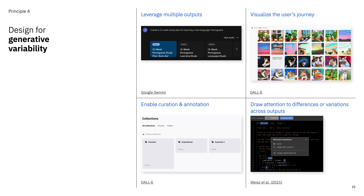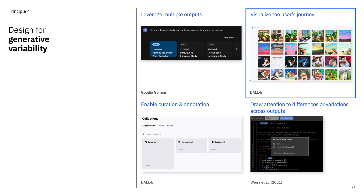Now let's talk about the principles that are unique to generative AI. Recall that generative variability is a core strength of generative AI — these strategies are all about helping users leverage and manage it. Generative models are capable of producing many different outputs for any single given input. Designers can lean into this characteristic, either by generating multiple outputs and showing them to users, or by showing only the best one. Google Gemini does this by showing a single response but allowing users to view alternate drafts. It's also important to visualize the user's journey — show them the history of everything they've generated, including prompts and model parameters, like how DALL-E shows a user's history as a gallery.